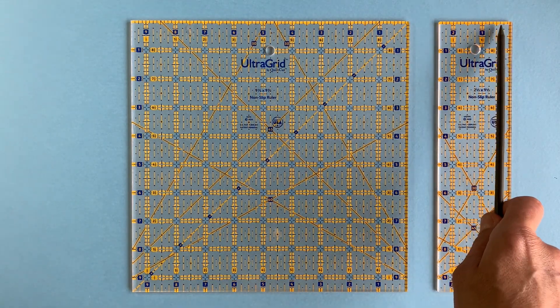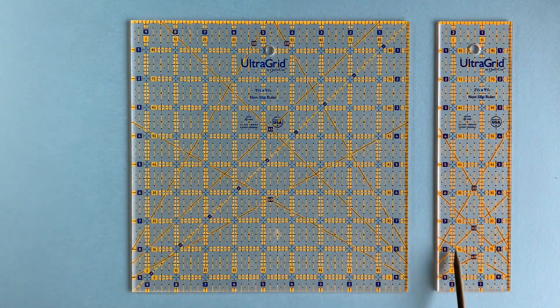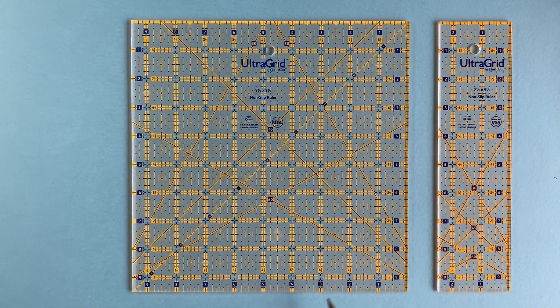Precision 1 inch measurement scales are printed across the top and bottom of the quilting rulers in both directions, allowing for right and left hand use.